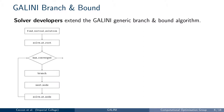Galini implements a generic branch and bound algorithm that solver developers extend to implement new solvers. The algorithm is a fairly standard branch and bound. Galini manages the state of the tree for you so that you can focus on the core of your solver. You implement a new solver by subclassing the branch and bound class provided by Galini and implementing the required methods.